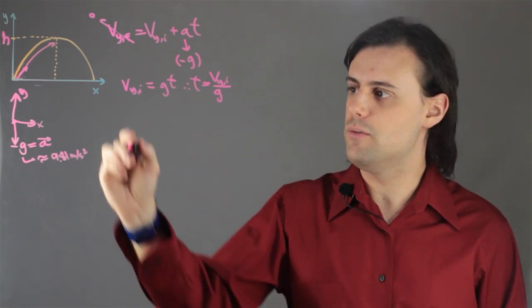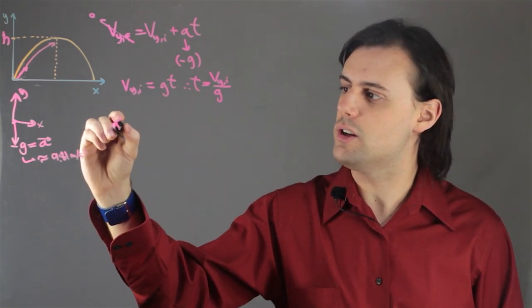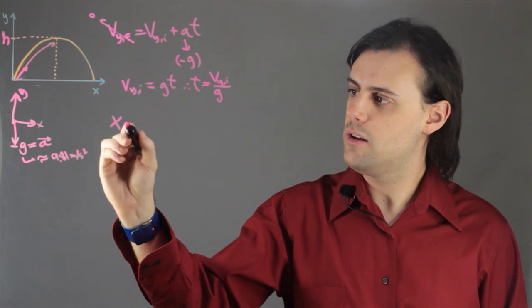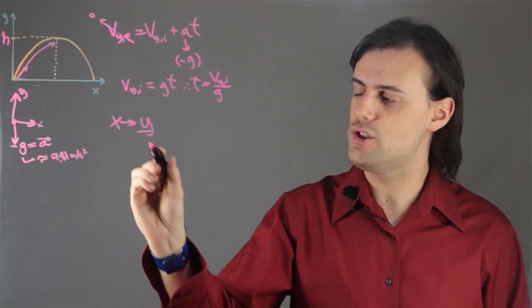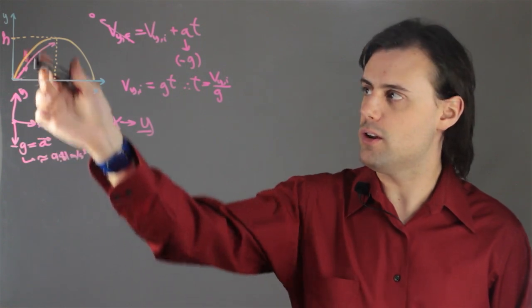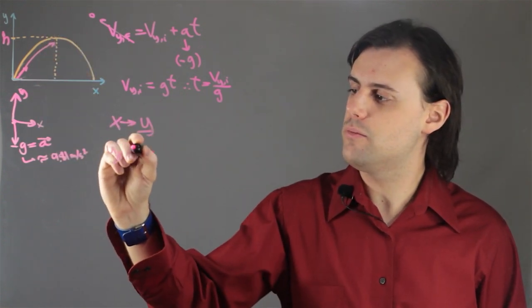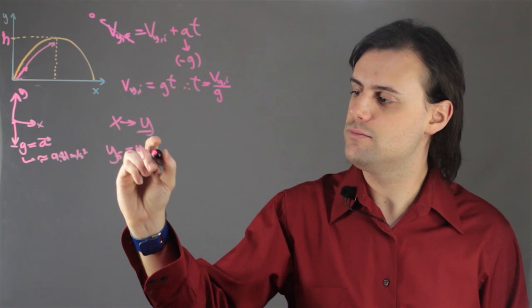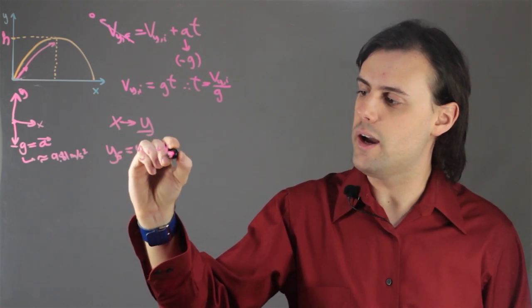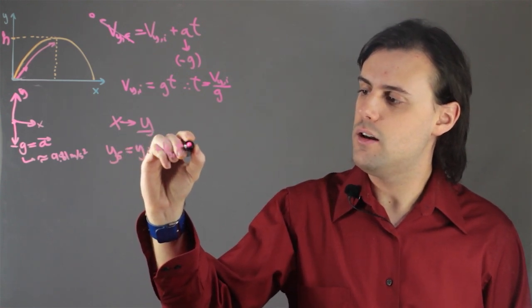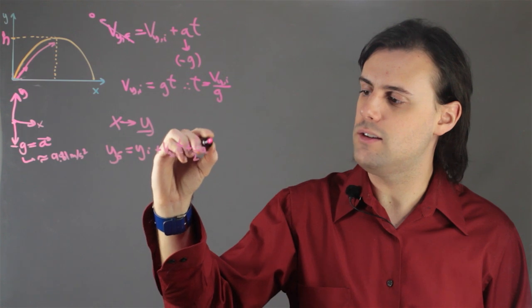Now, the second part of this problem involves using the position equation. But I'm going to use the position equation for y, since I'm only interested in the vertical direction. So I have y final is equal to y initial plus v_y initial t plus 1 half at squared.